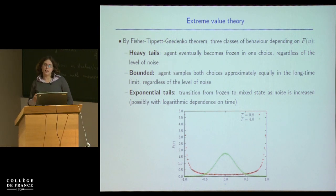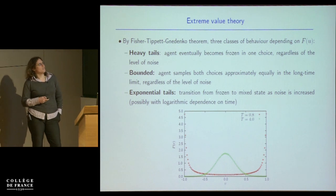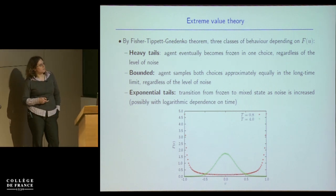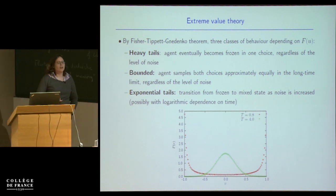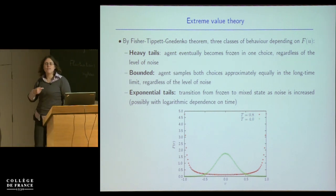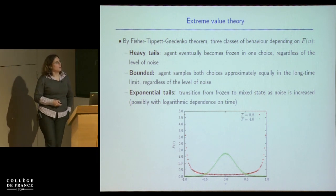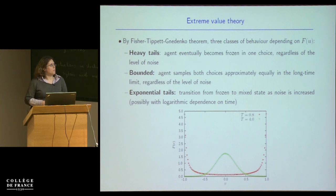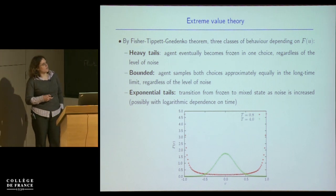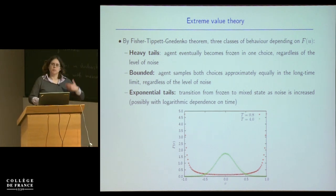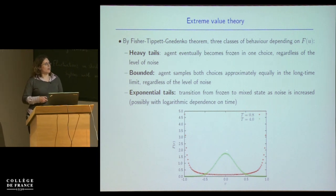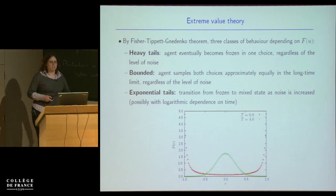The interesting case is when the distribution has exponential tails, and then there's a transition from a frozen state to the mixed state as I increase the noise, possibly with some logarithmic dependence. To convince you that this works, I show simulation data: a histogram of the time-average velocity after 100 time steps for an exponentially distributed utility, where I predict a phase transition at noise equal to 1. The red points, with noise 0.8 below the transition, show the histogram sharply peaked at net velocity minus 1 or plus 1 — always going left or always going right. Taking a noise value above the transition, you see a peak around the symmetric fixed point — the mixed decision state where you sample both choices.